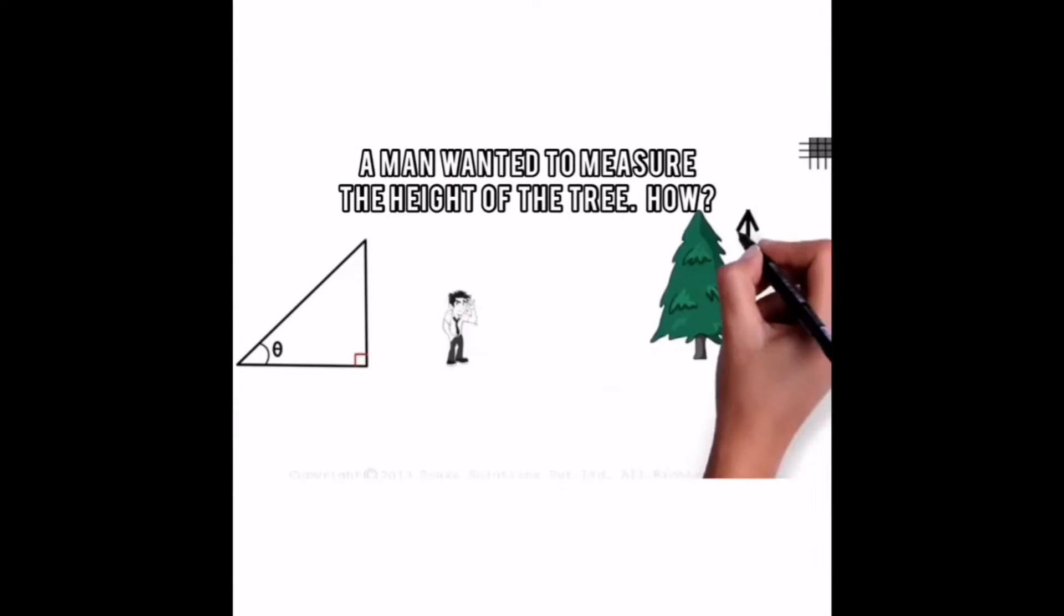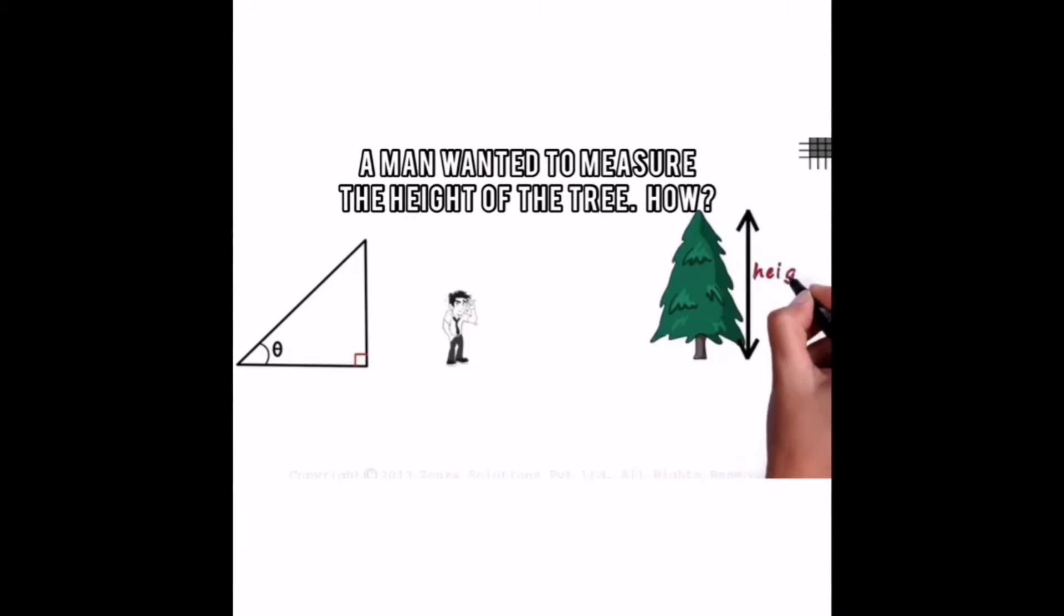He has to measure this length which is the height. One way is to make an approximate guess. But a better way to find the height is by using trigonometry. Let's assume this distance is known to us.